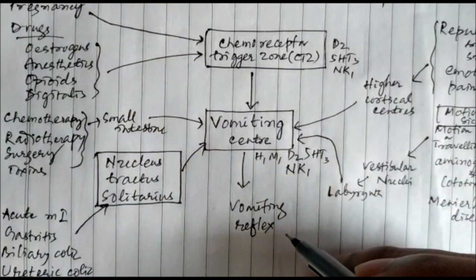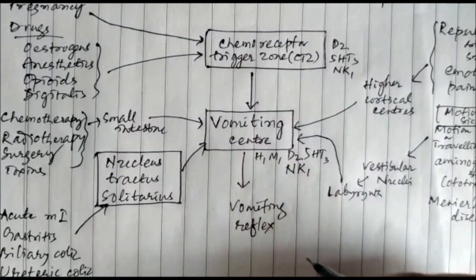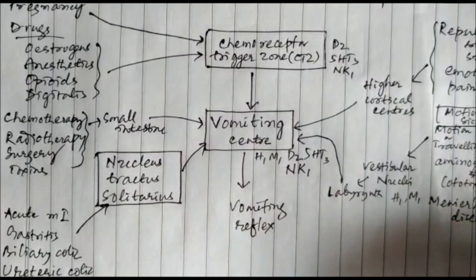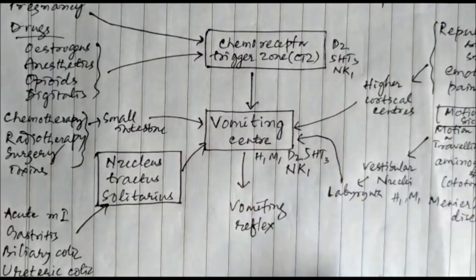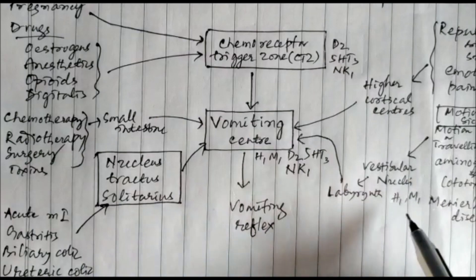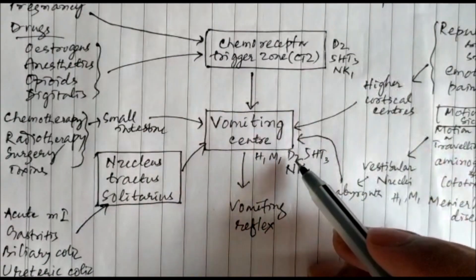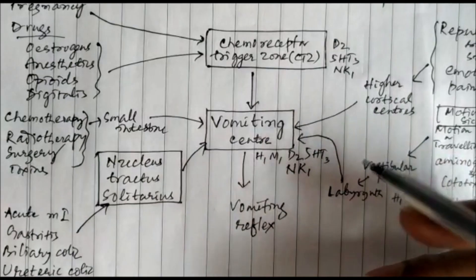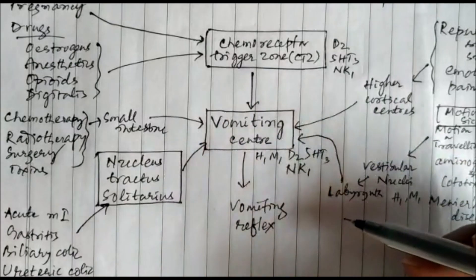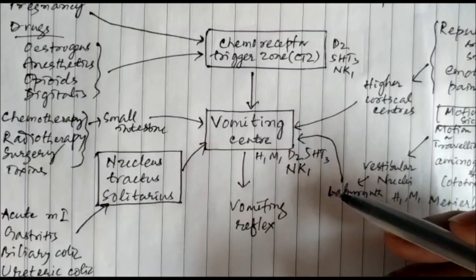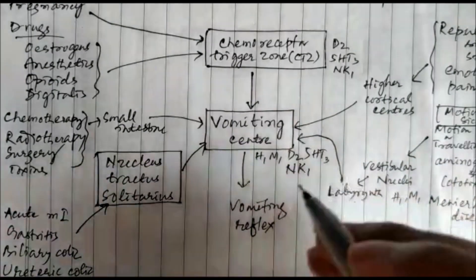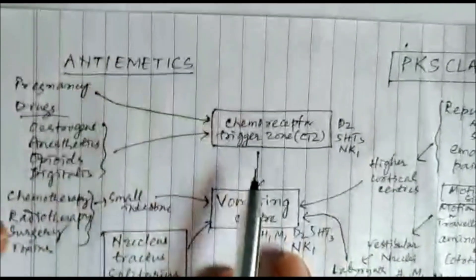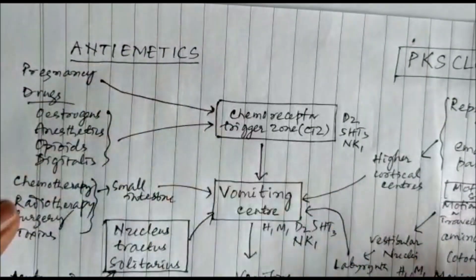In the vestibular nuclei, the receptors present are H1 and M1. The receptors involved in vomiting overall are H1, M1, D2, 5HT3, and NK1. Accordingly, all these receptors can be blocked to prevent vomiting.